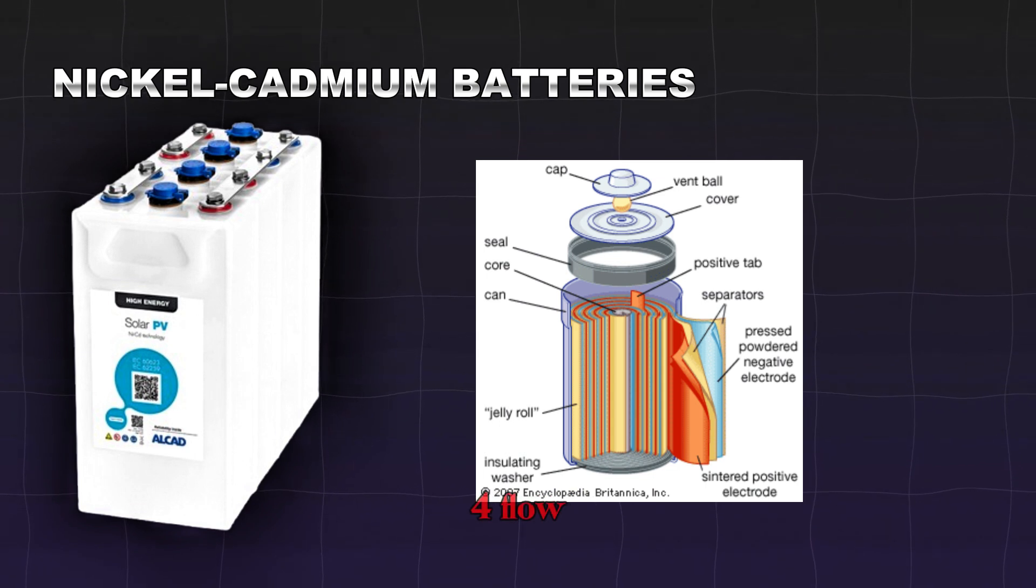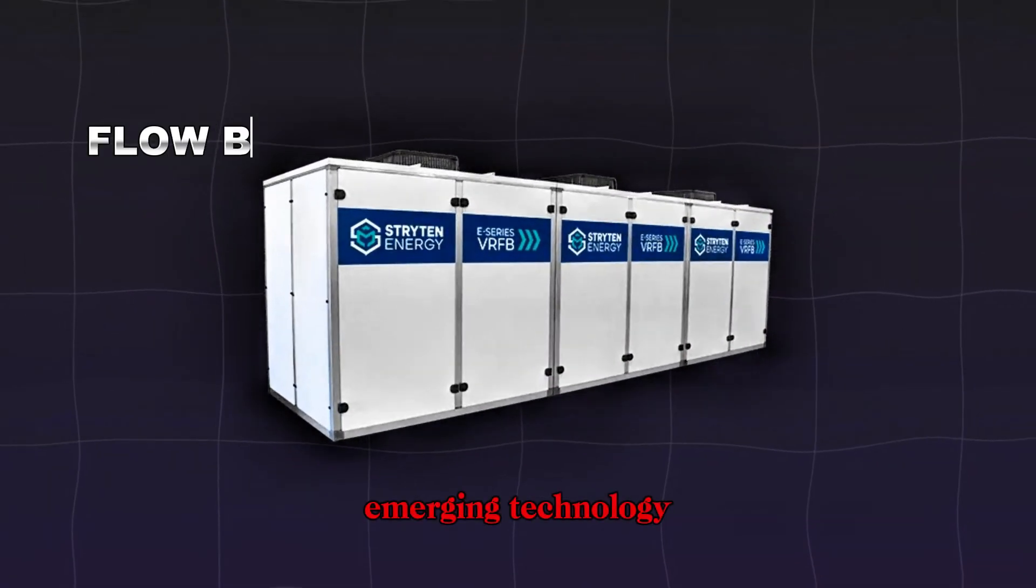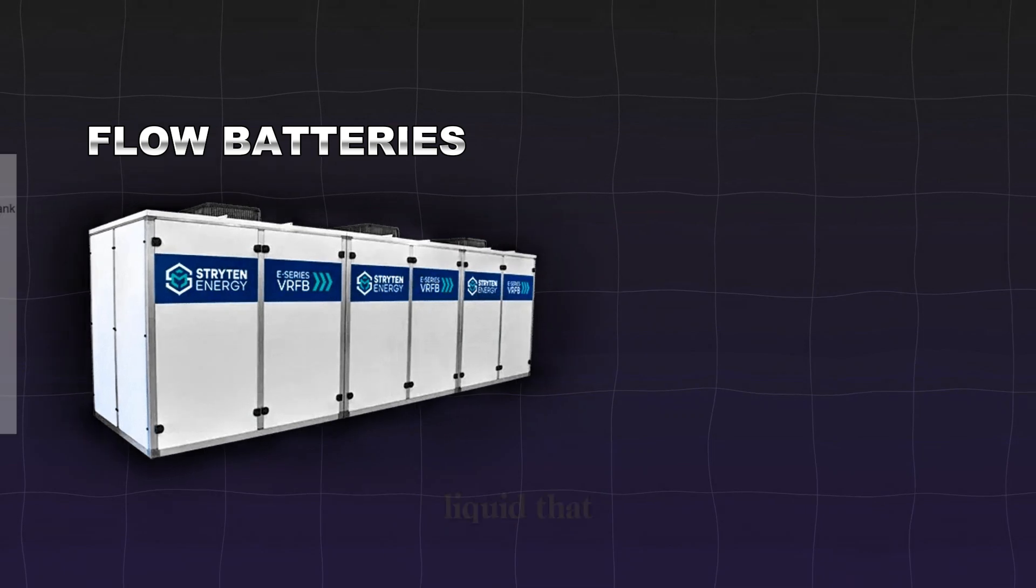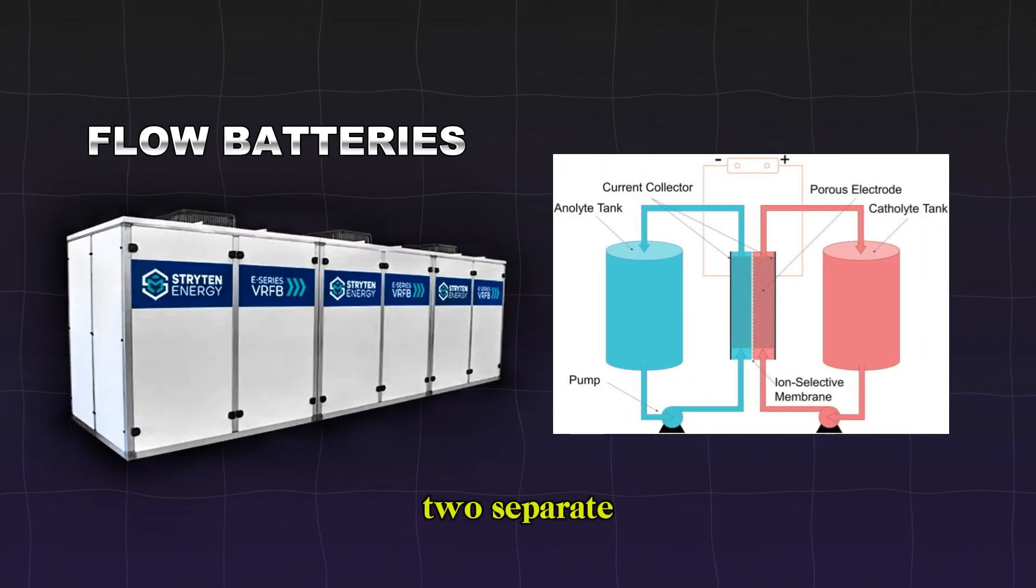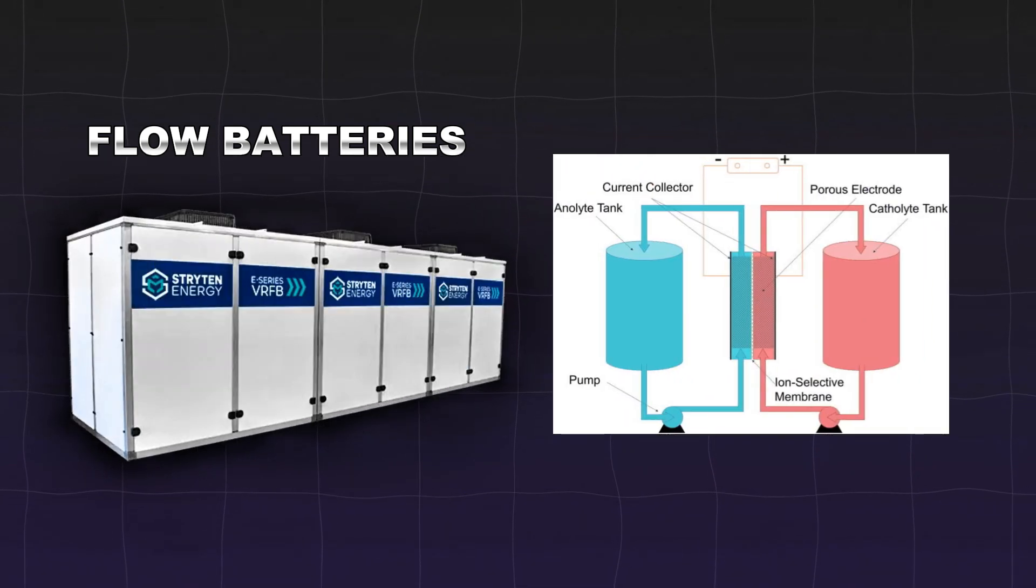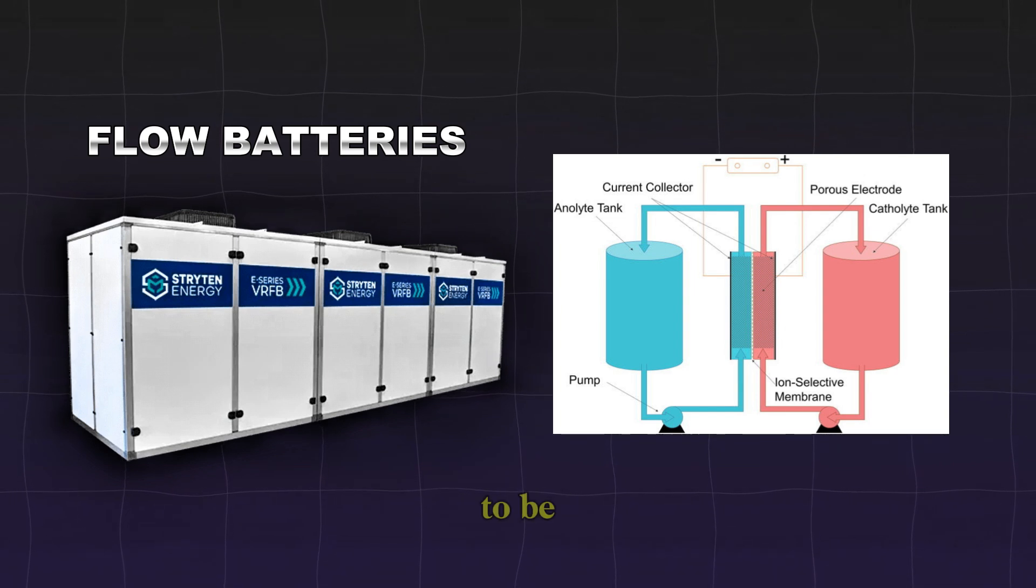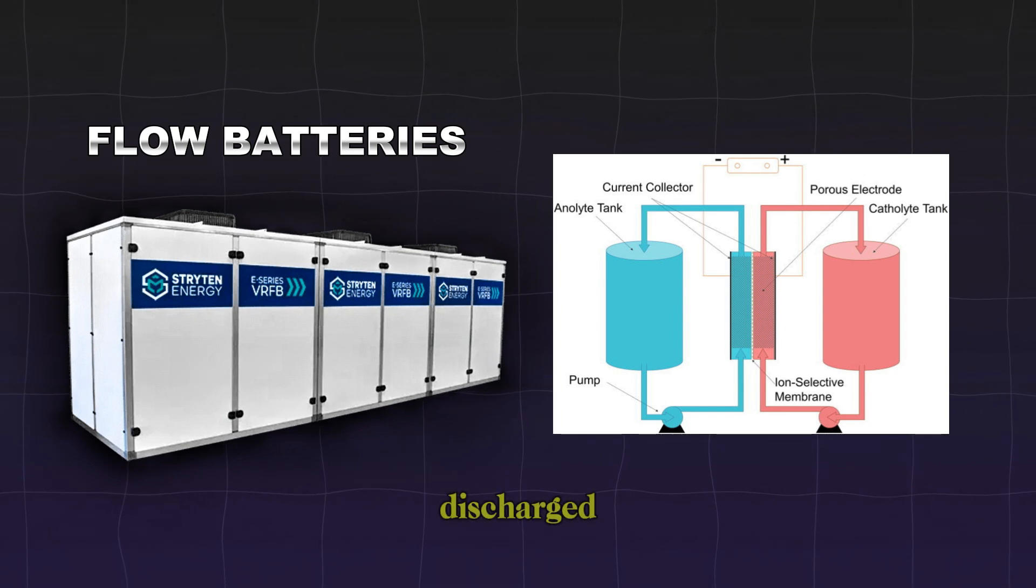Four, flow batteries. Flow batteries are an emerging technology in the energy storage sector. They contain a water-based electrolyte liquid that flows between two separate chambers, or tanks, within the battery. When charged, chemical reactions occur, which allow the energy to be stored and subsequently discharged.